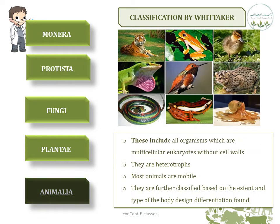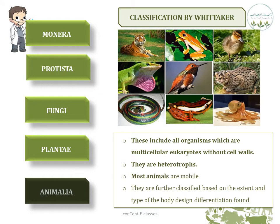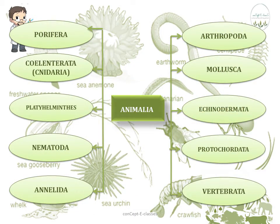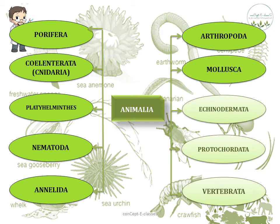In kingdom Animalia, organisms are multicellular eukaryotes — they have a nucleus but do not have cell walls. They are heterotrophs, meaning they depend on other organisms for food. Most animals are mobile. Kingdom Animalia is further classified based on body differentiation into: Porifera, Coelenterata, Platyhelminthes, Nematoda, Annelida, Arthropoda, Mollusca, Echinodermata, Protochordata, and Vertebrata. Let's study each of these divisions briefly.